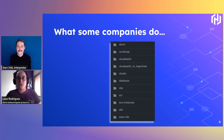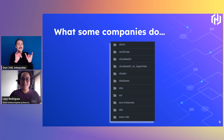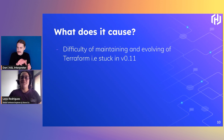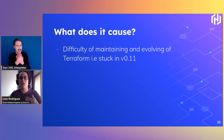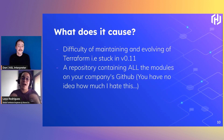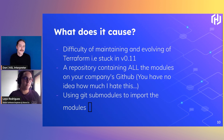In my journey in the infrastructure as code world I have seen this too many times: we create one or more private repositories containing one or more Terraform modules. This is a problem. We can list some issues with that: difficulty maintaining and evolving Terraform — for example, getting stuck on version 0.11 or 0.13. Having a repository containing all the modules on your company's GitHub, and using GitHub modules to import them — I have no idea how much I hate this pattern.